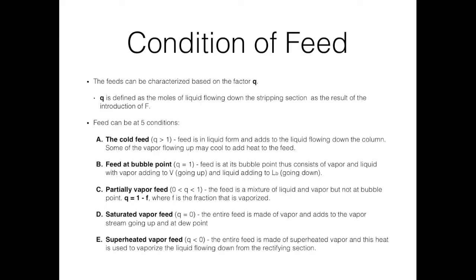The saturated vapor feed is where Q equals zero, meaning the feed is entirely vapor and adds to the vapor flow moving up the distillation column. The superheated vapor feed is when Q is less than zero. This is similar to the saturated vapor feed but at a superheated temperature, and because it is at a high temperature it can be used to vaporize any liquid flowing down from the rectifying section.